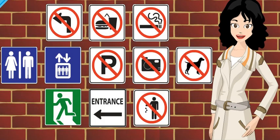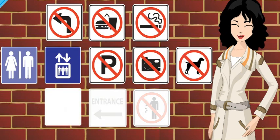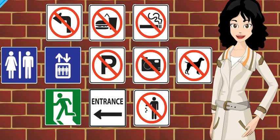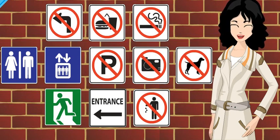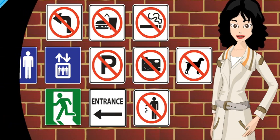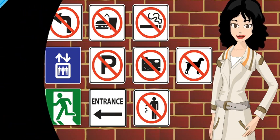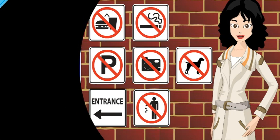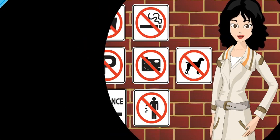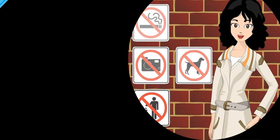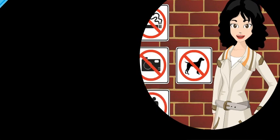Today you've learned so much about signs. Be sure you obey what the signs tell you. Today you've learned the meaning of many types of signs. If you ever don't know the meaning of a sign, try using the sentence structure you learned today to ask an adult. Goodbye and do have a great day!